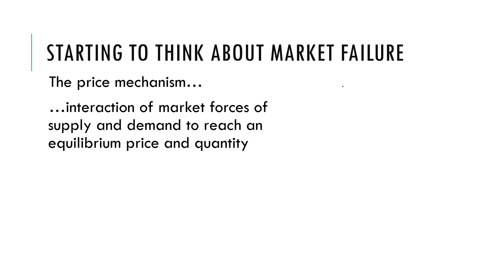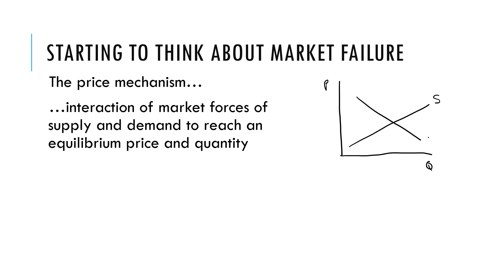So thinking about how I would show that, I've got P, I've got Q — not the neatest graph I know — supply and then demand. Where they intersect, that gives me the price in the market, and this here is the equilibrium price, PE, and then the equilibrium quantity, QE.